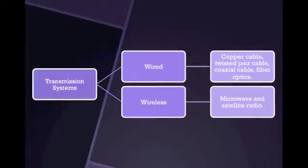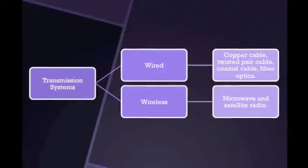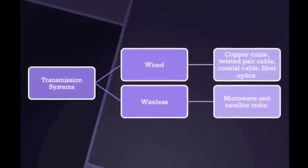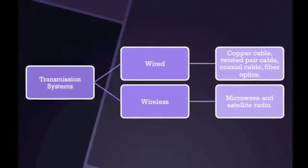Wired transmission systems may use copper cable, twisted pair cables, coaxial cable, or fiber optics. The most common wireless transmission systems are microwave and satellite radio to interconnect far-end and near-end equipment.